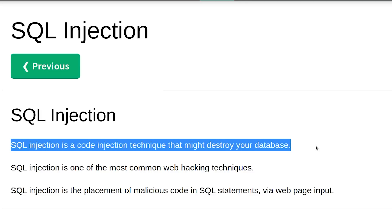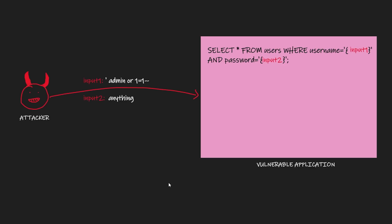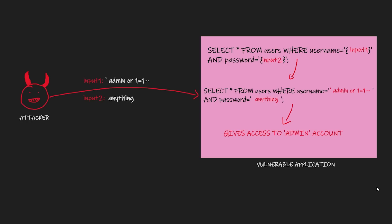The basic concept of SQL injection is that an attacker can craft special inputs that will be included blindly in the backend SQL queries of the vulnerable application. This results in the attacker being able to modify the hard-coded SQL query in the application's code to literally anything he wants. This enables the attacker to do things like accessing sensitive details in the database like the passwords of other users, deleting data from the database, or even compromising the whole application server and taking full control of it.